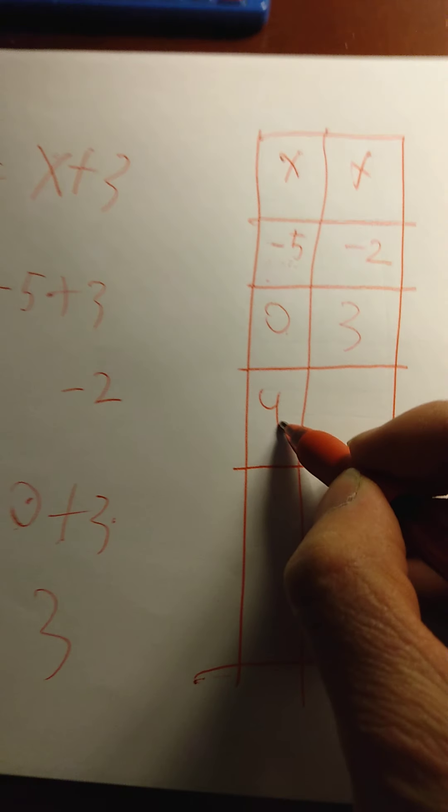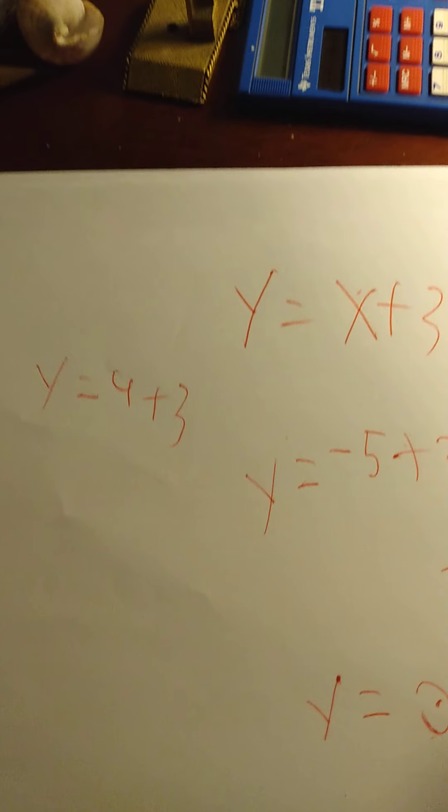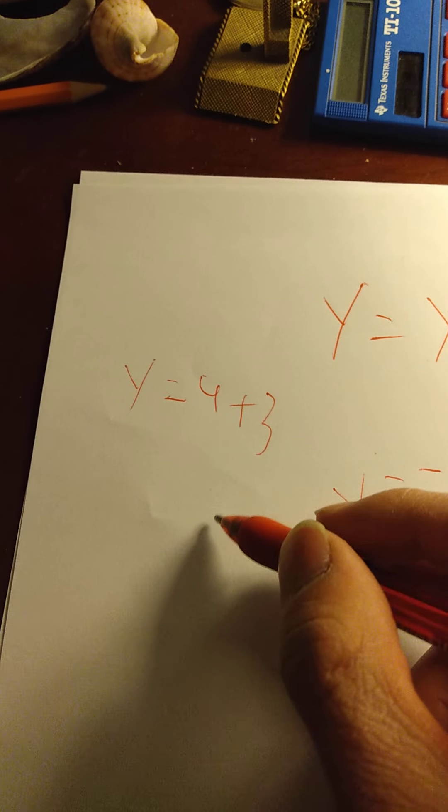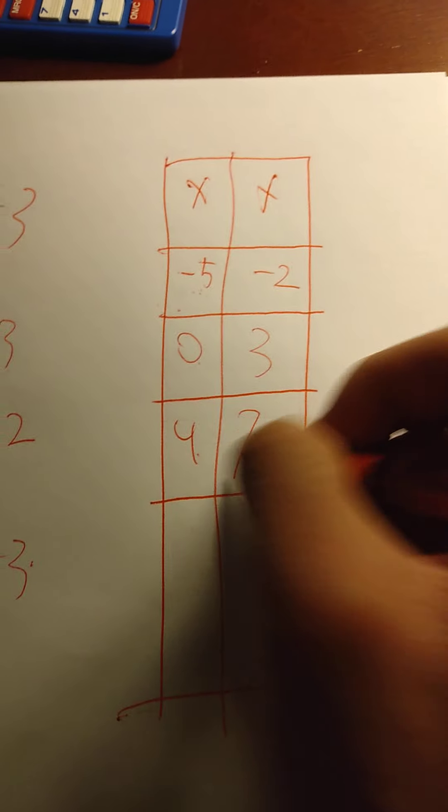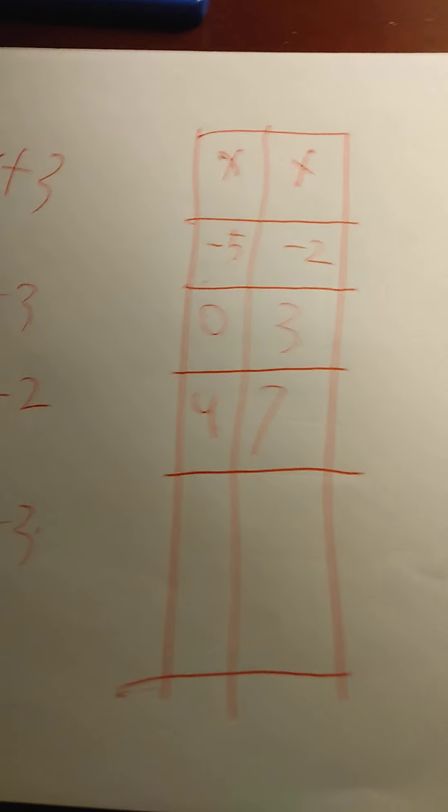So here's 4 right here. If y equals 4 plus 3, 4 plus 3, that would be 7. So 4 is 7. So let's try and plot that.